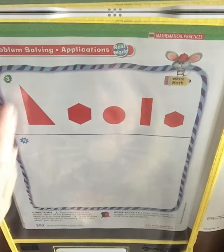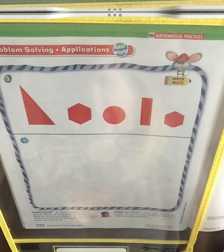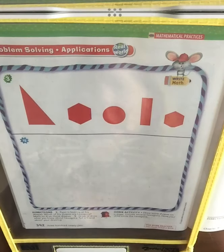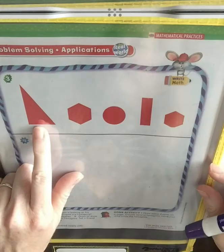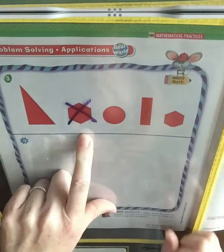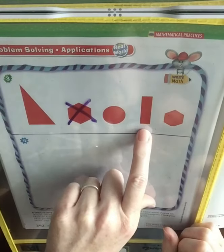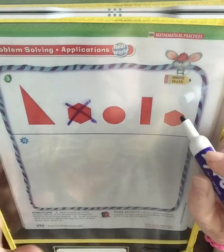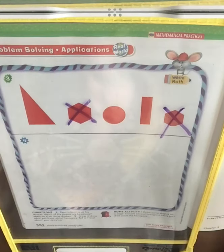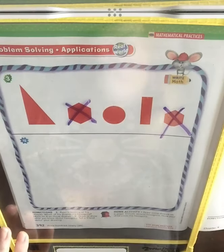For question number three, Ryan is looking at his shapes. Which of his shapes are hexagons? Mark an X on those shapes. There's a hexagon, and there's the other hexagon. For question number four, draw to show what you know about hexagons, and tell a friend about your drawing.